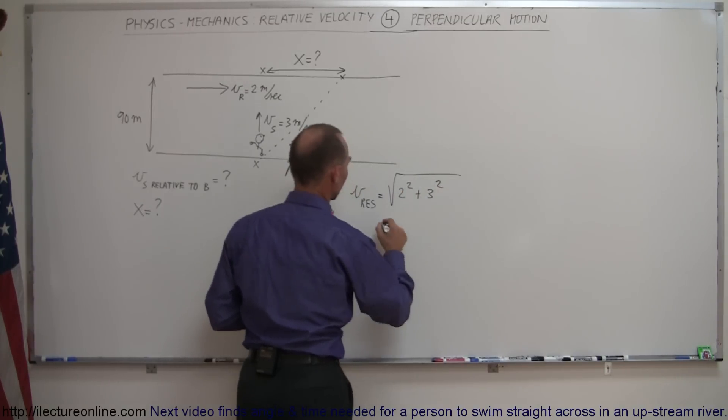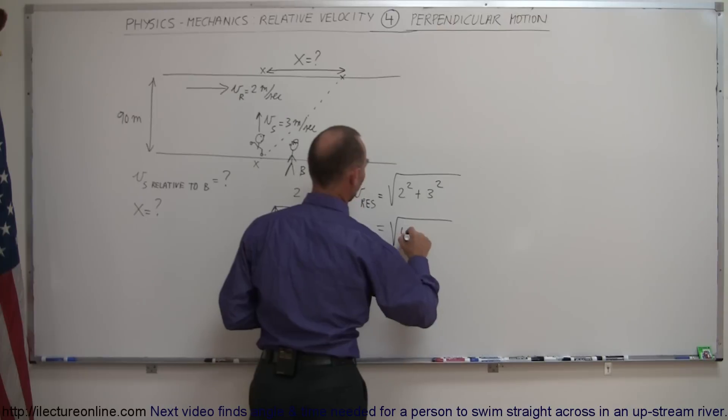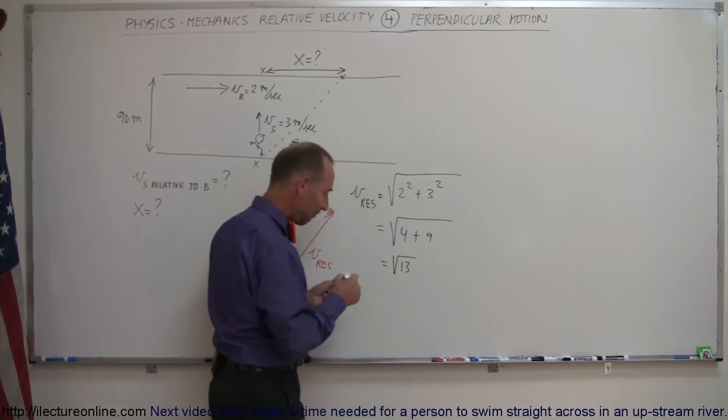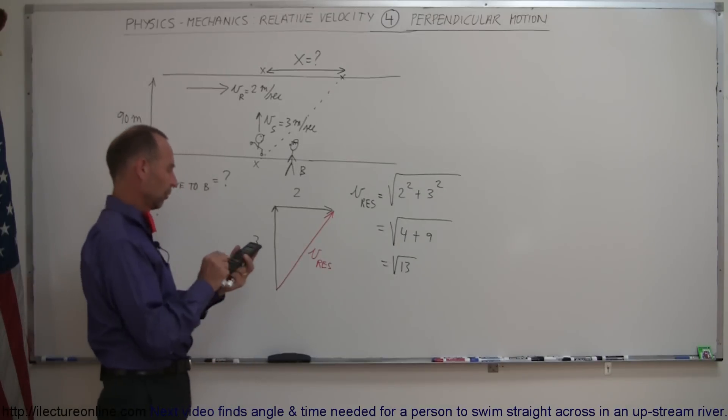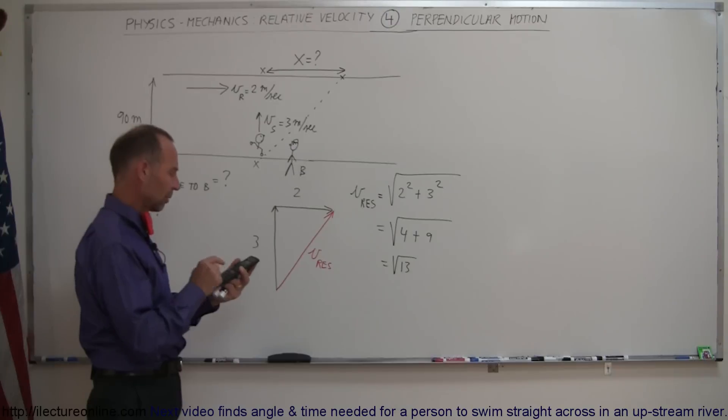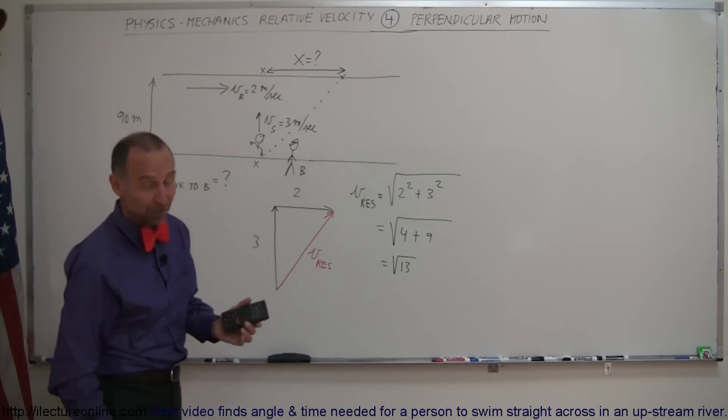And so this would be equal to the square root of 4 plus 9 which is equal to the square root of 13. So that's how fast the swimmer will appear to be swimming according to observer B. So that's square root of 13, 3.6 meters per second.